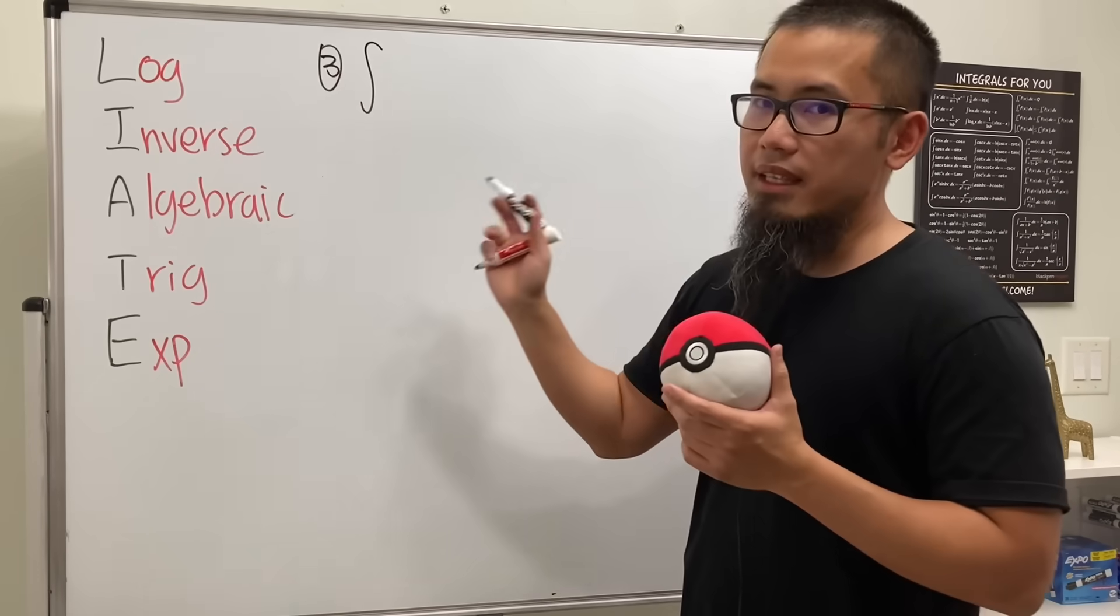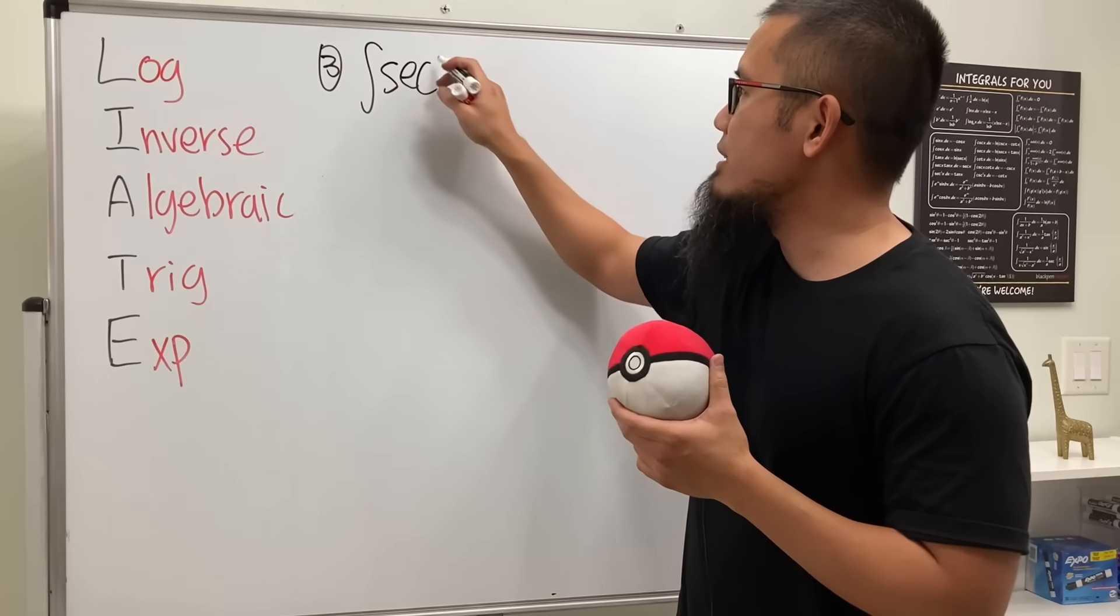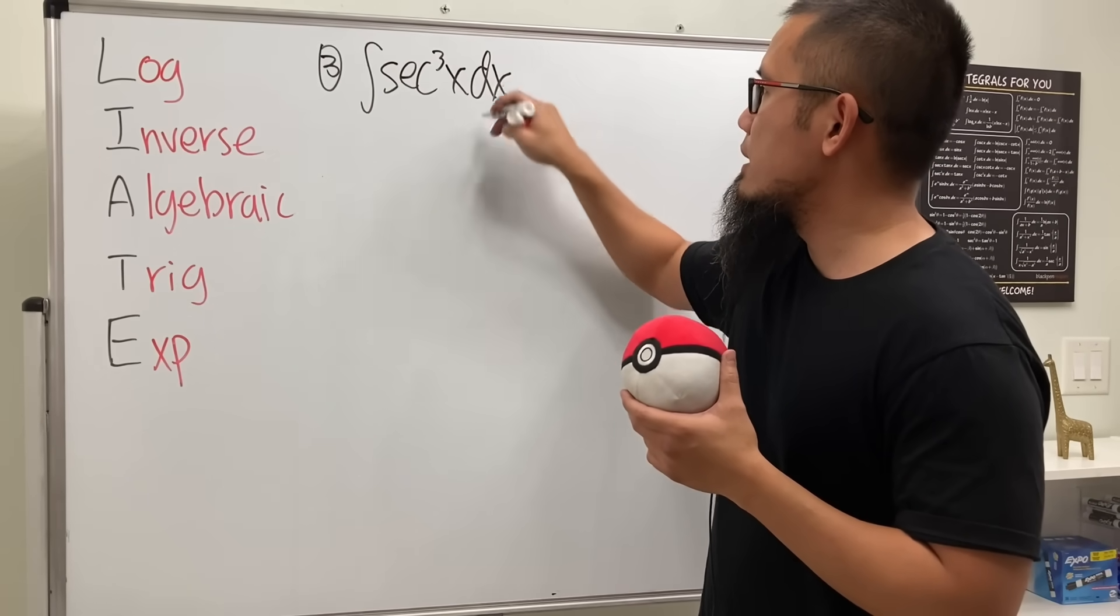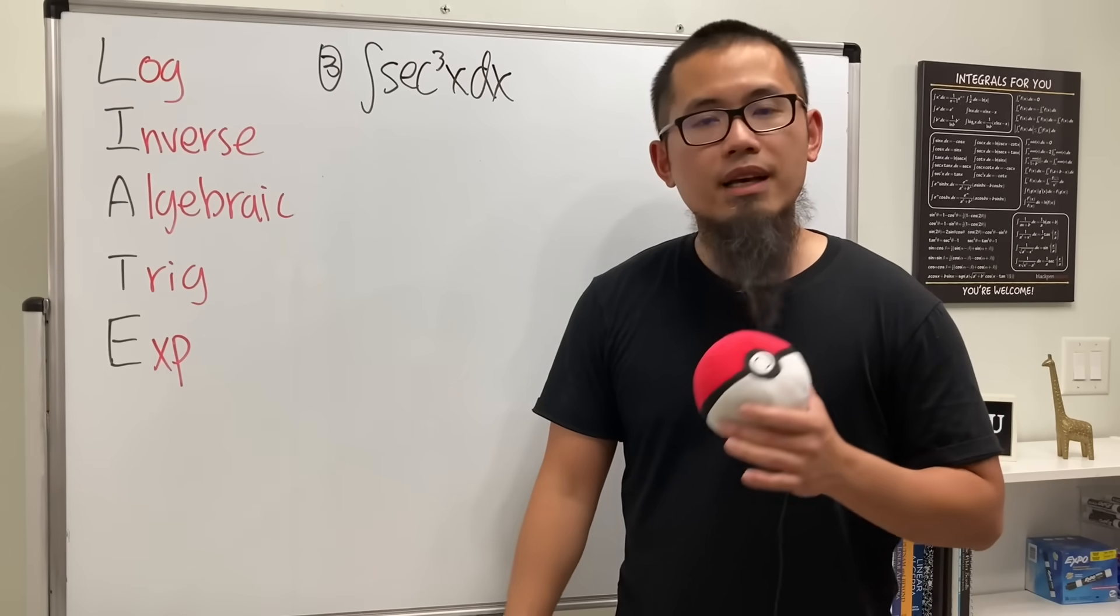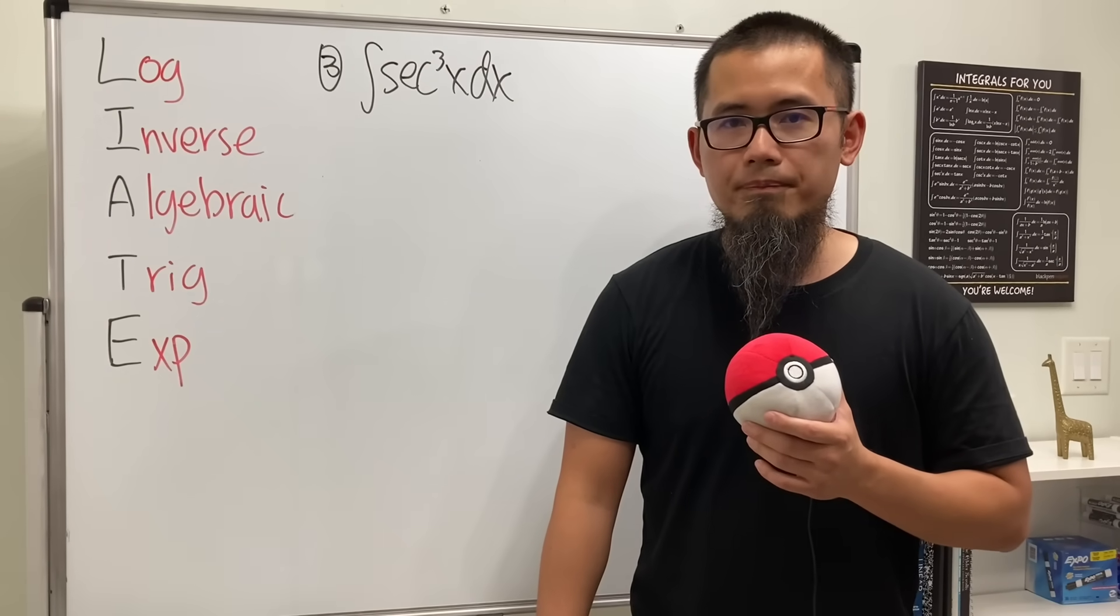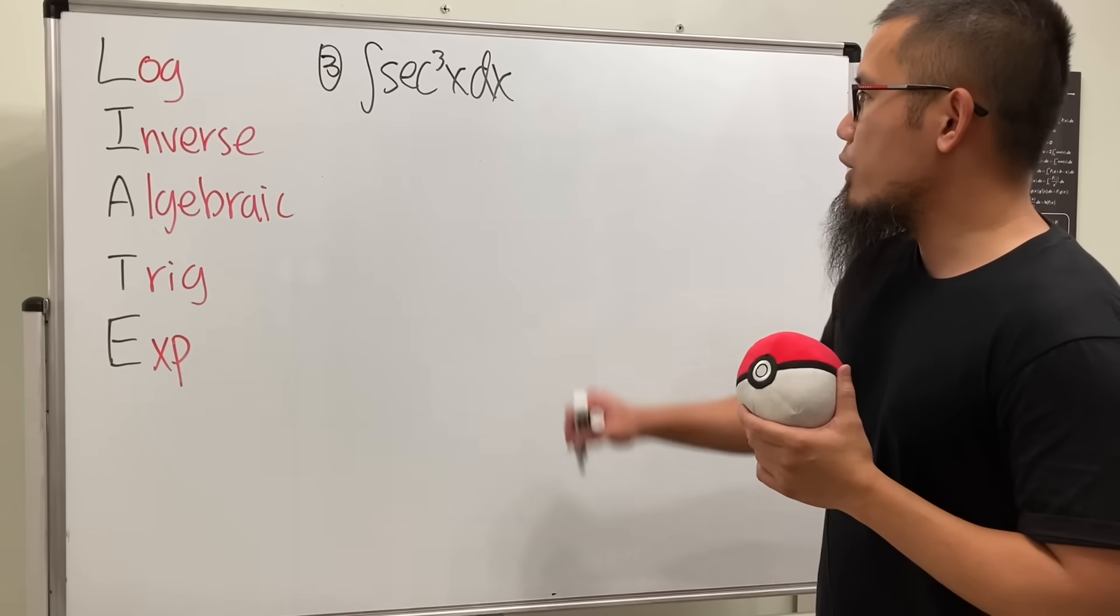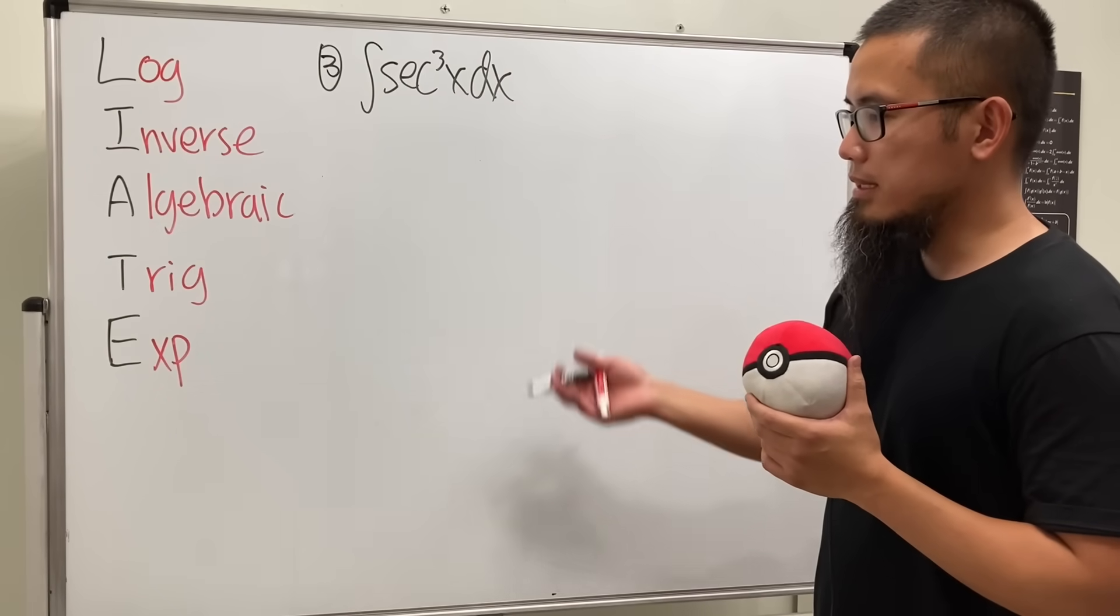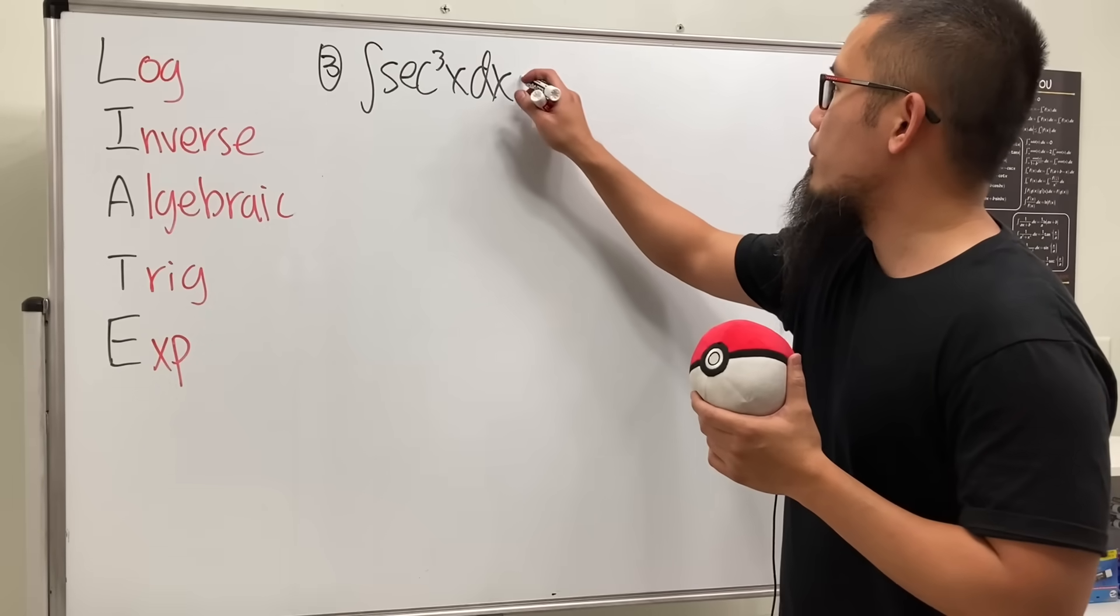Number three, let's look at the integral of secant to the 3rd power x. We actually have to use the integration by parts. First off, we are going to break this apart into secant to the 1st power times secant to the 2nd power. So let's see how it looks like.